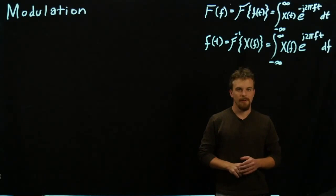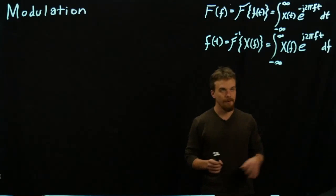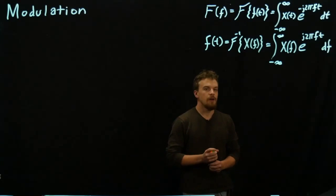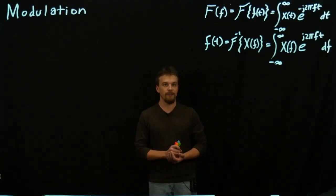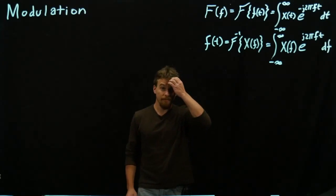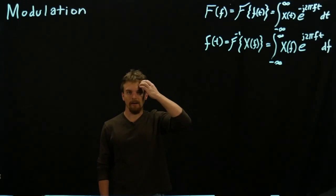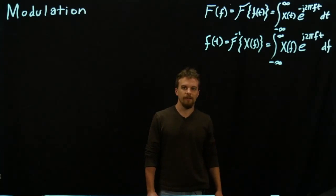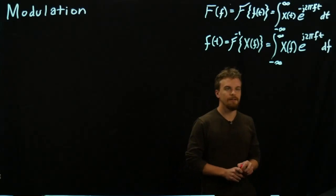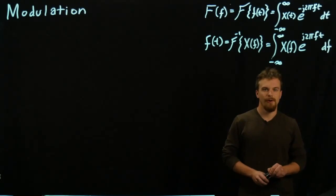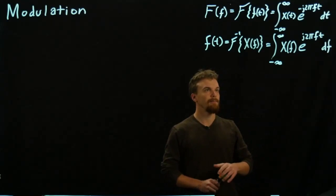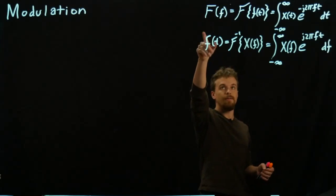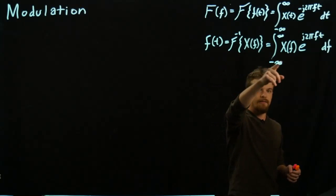For all of this, we're going to have to think about the Fourier transform, where we're switching back and forth between a time domain and a frequency domain. That helps us do useful things. We'll talk a little bit about why we do modulation at the end. But first, here are the definitions of the Fourier transform and the inverse Fourier transform.